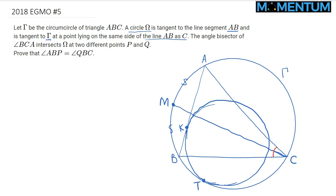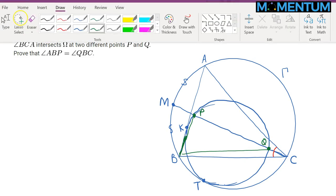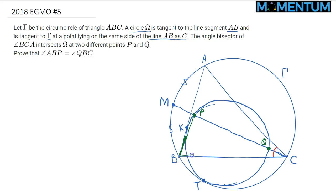The angle bisector intersects omega at two different points P and Q. Let's call this one P and this one Q. We need to show that angle ABP and angle QBC are congruent. These are very thin angles at B.